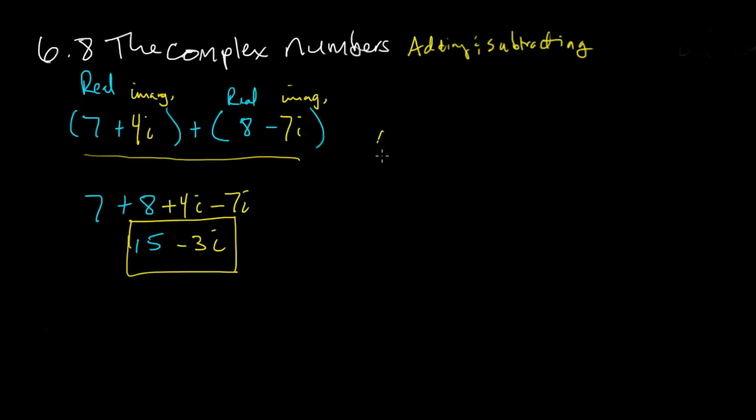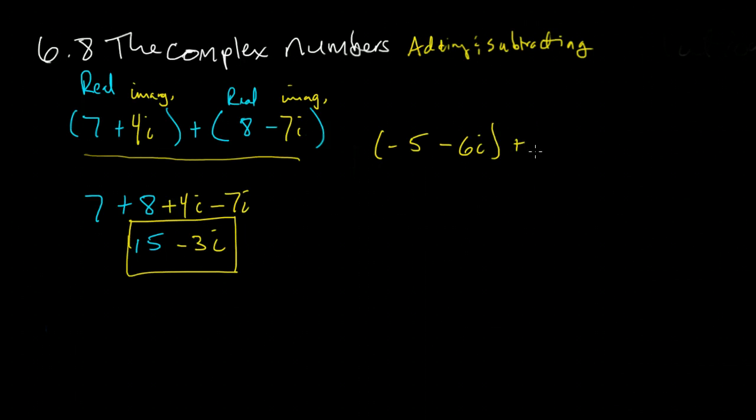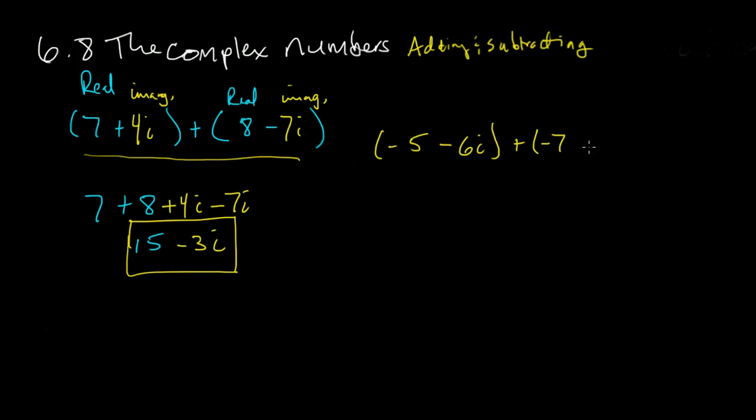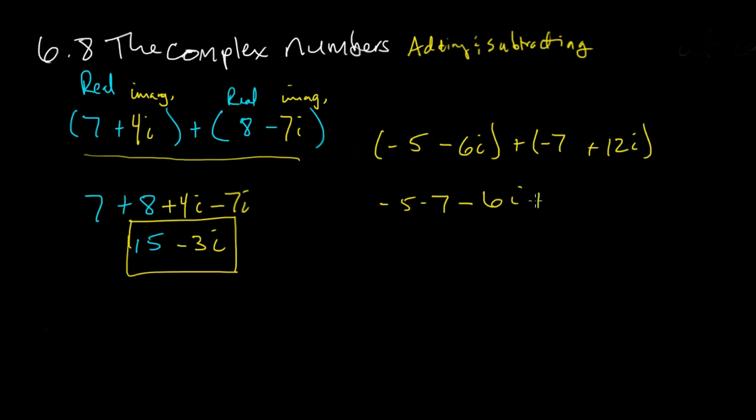Let's try another one. And this time, we don't need to do different colors. That's negative 5 minus 6i, and to that we will add negative 7 plus 12i. So again, we want to put our real number parts with our real number parts, so that'll be negative 5 minus 7. And then our imaginary number parts: minus 6i with our imaginary number parts.